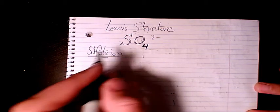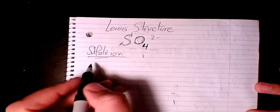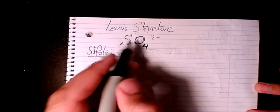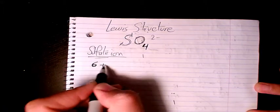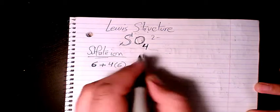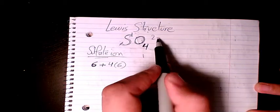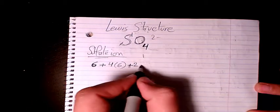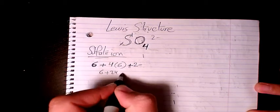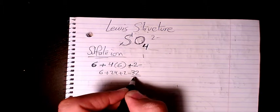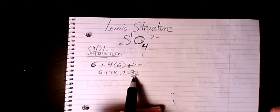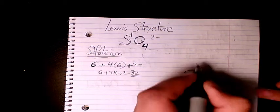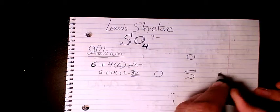Counting the total valence electrons. S is 6, oxygen is 4*6, so we have four of them, so 4 times 6, and we have two negatives here, so plus 2. So that makes it 6 plus 24 plus 2, which makes it 32 valence electrons. Then I need to have S in here and all around this S.